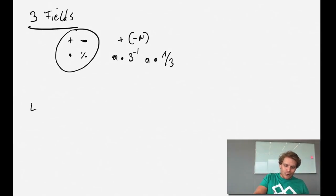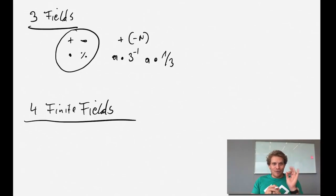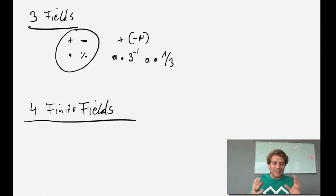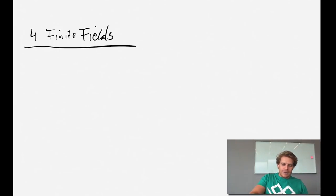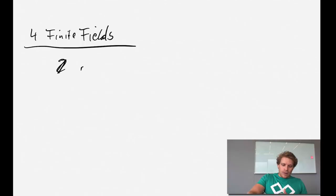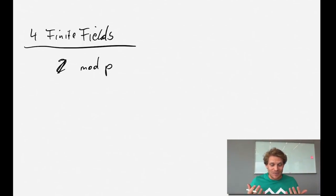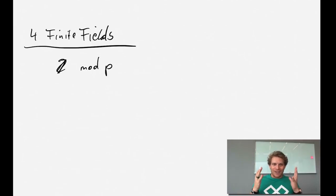Now it gets very interesting - finite fields. This is something we need throughout cryptography, relevant for RSA, Diffie-Hellman, and elliptic curves. We create a finite field by taking a group and applying mod a prime number. We always create a cycle, similar to a clock. The reason we need a prime is very important: we need the identity element and the invertibility element to work properly.